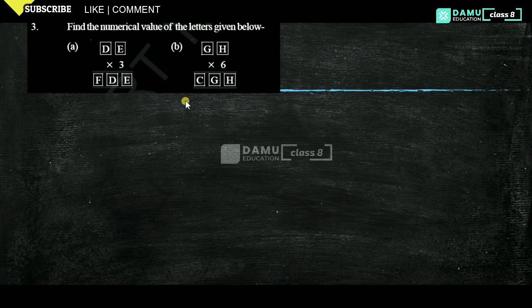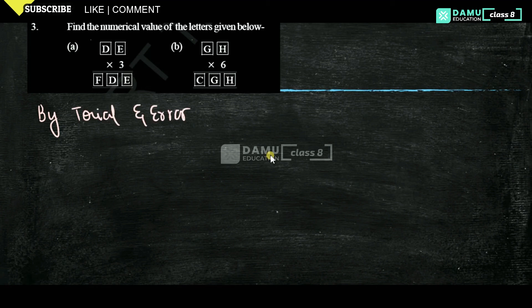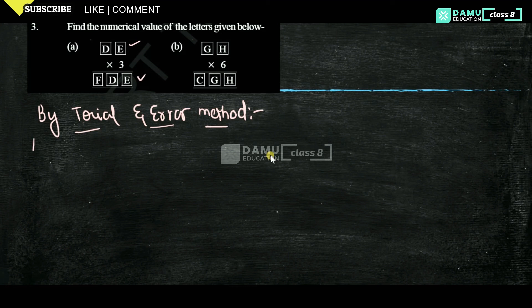So in this module we are going to find the numerical value of letters using the trial and error method. So our first letter is E: E into 3, if you multiply with the same, you get E as the same. Let E be equal to 0.